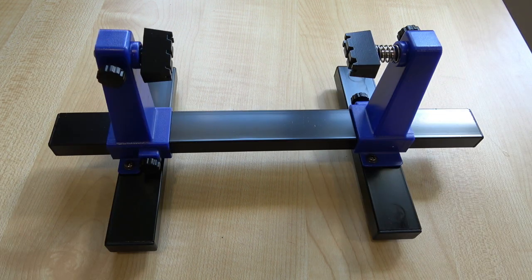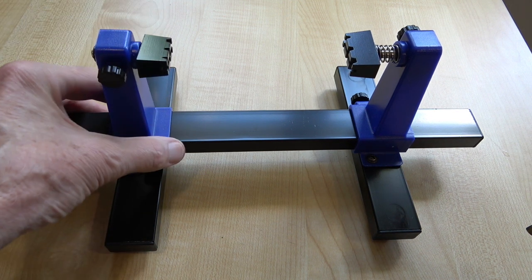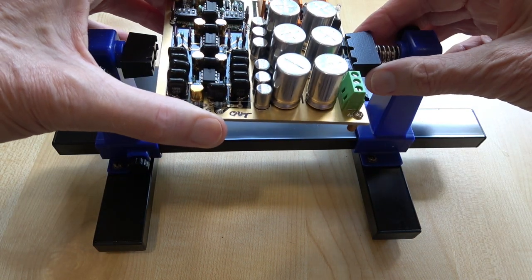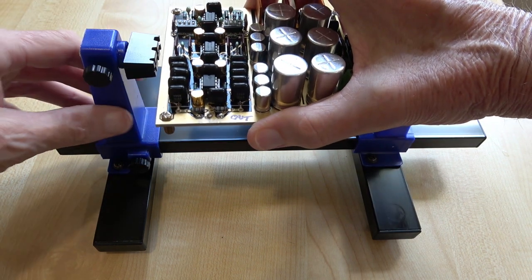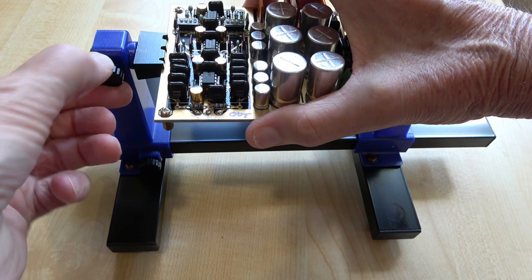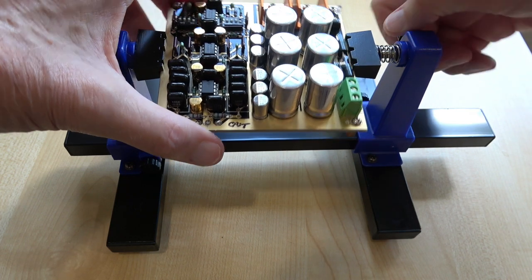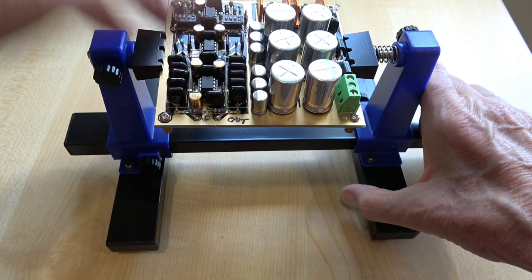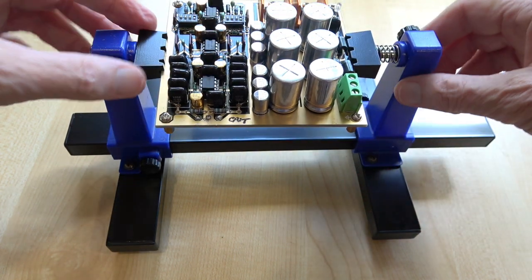So what's it like in use? Well, I've got a PCB here and we're going to put it into the device. That fits in that side and that fits in there, we'll do the clamp up and we'll do the clamp up here. It would be embarrassing if this fell off now, wouldn't it?